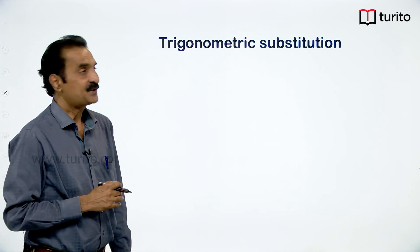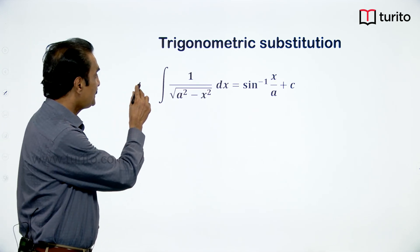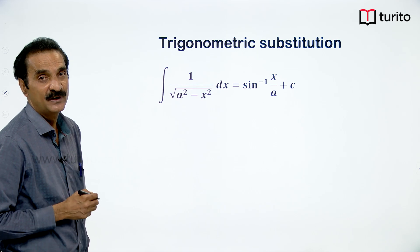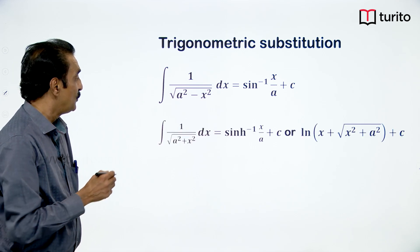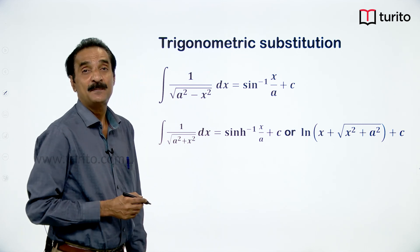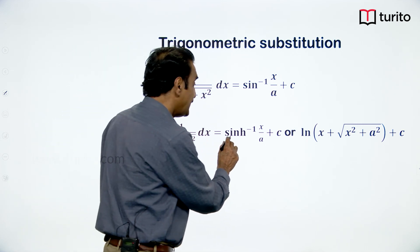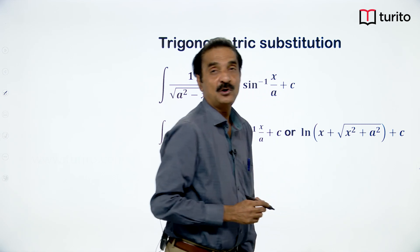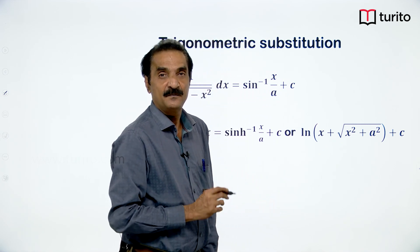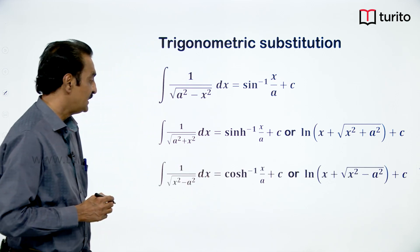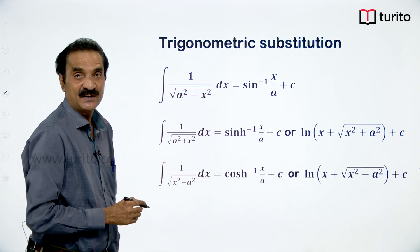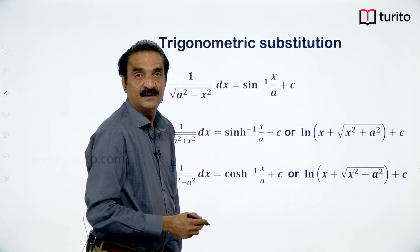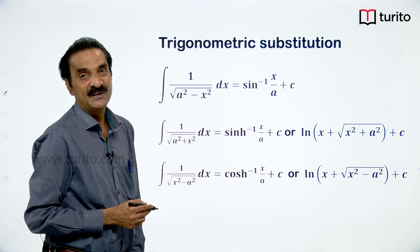The formulae for integration: integral of 1 / √(a² − x²) = sin⁻¹(x/a) + C, proved in the previous lecture. Integral of 1 / √(a² + x²) dx = sinh⁻¹(x/a) or log(x + √(x² + a²)). And integral of 1 / √(x² − a²) dx = cosh⁻¹(x/a) or log(x + √(x² − a²)) + C.